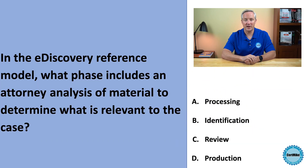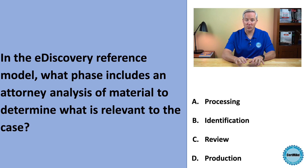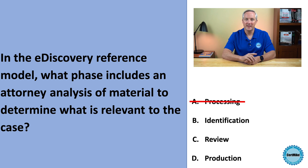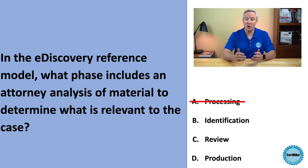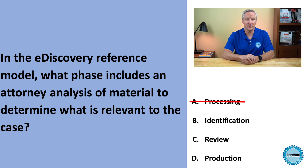The eDiscovery reference model uses nine stages to describe the discovery process. During stage five, processing, data is processed to remove irrelevant information as well as prepared for review and analysis — that's not our correct answer. During stage two, identification, stored information is identified in order to know what you have and where it is, so that isn't the correct answer either.